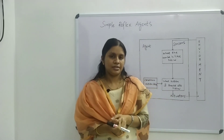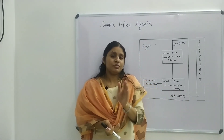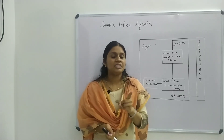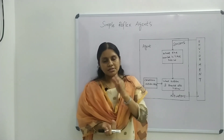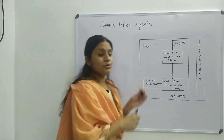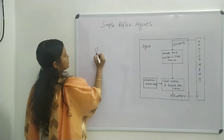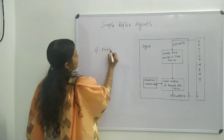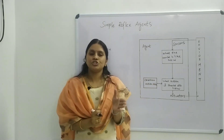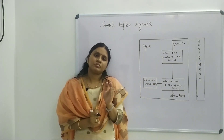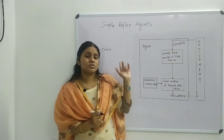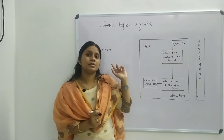We call this reaction a reflex reaction. This kind of connection having only one possibility is called a condition-action rule, and this condition-action rule is implemented by using an if-then clause. The agent function is constructed based on the condition-action rule, that is, if-then.